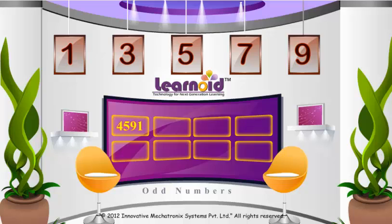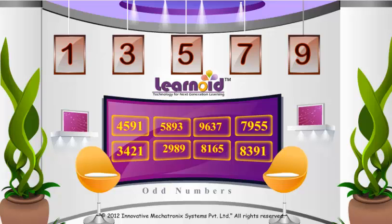4,591; 5,893; 9,637; 7,955; 3,421; 2,989; 8,165; 8,391. Let's check the last digit in these numbers: 1, 3.